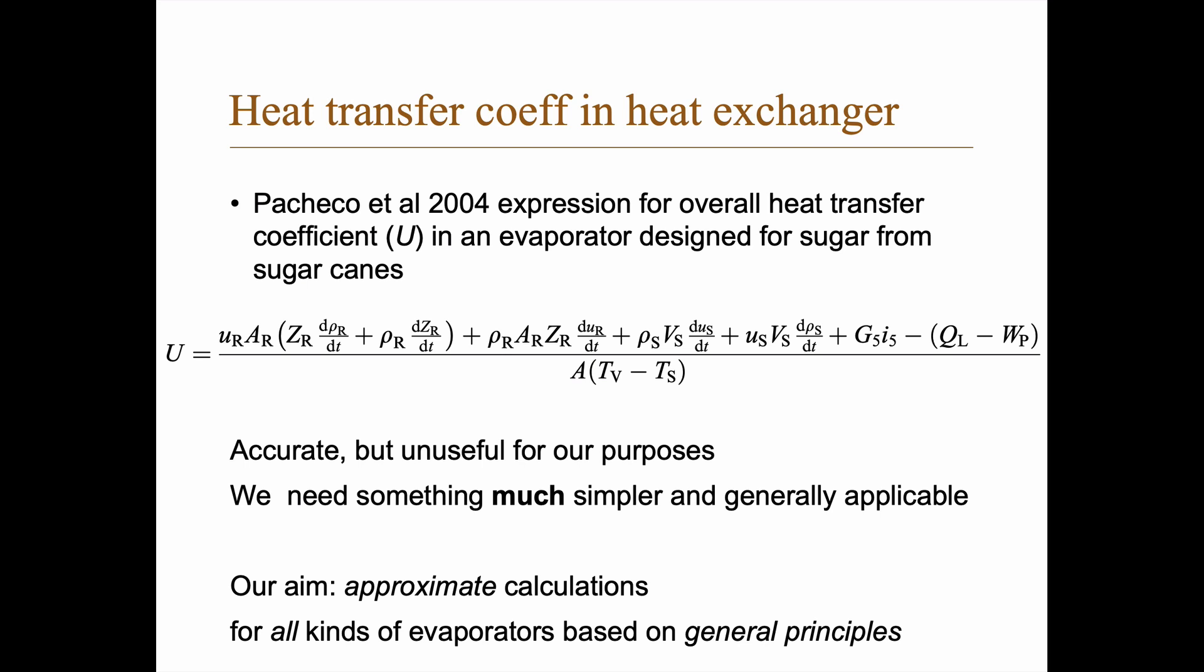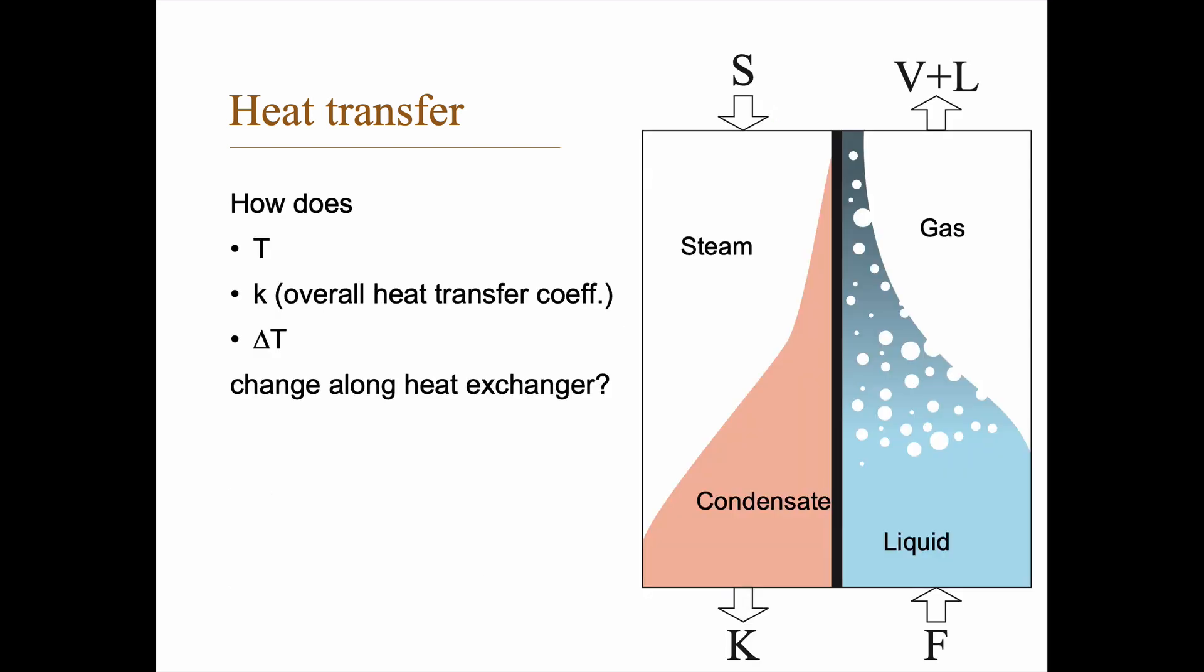So what's happening? If you think of the heat exchanger, you have two sides and a wall in between. On one side you have steam coming in, totally dry steam, and what comes out is only condensate. So there are different phases here and the process that happens is condensation. On the other side you have a liquid coming in with no gas and it starts to boil. Boiling is a very tricky process to describe and what comes out is a combination of gas and the concentrated liquid.